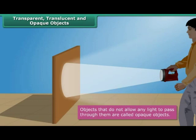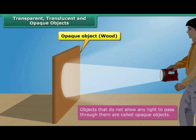Objects that do not allow any light to pass through them are called opaque objects. As a result, we cannot see through them. When light falls on an opaque object, its shadow is formed on the other side of it. Wood, sheets of metal, dark-colored plastics, rocks, etc. are examples of opaque objects.